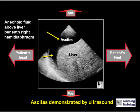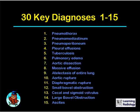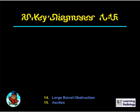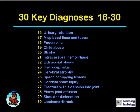On ultrasound, by convention the patient's head is to your left, feet to your right, anterior is up and posterior is down. On this sagittal image you can see the liver and the anechoic fluid between the top of the liver and the right hemidiaphragm, representing ascites. We covered 15 of the 30 key diagnoses in this podcast; in the next podcast we'll cover the next 15.